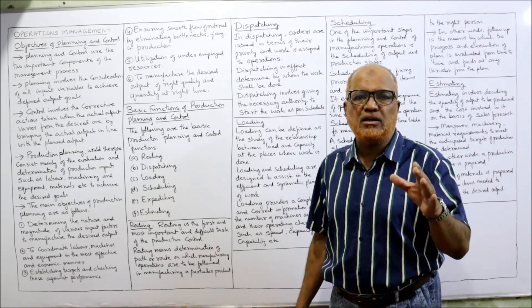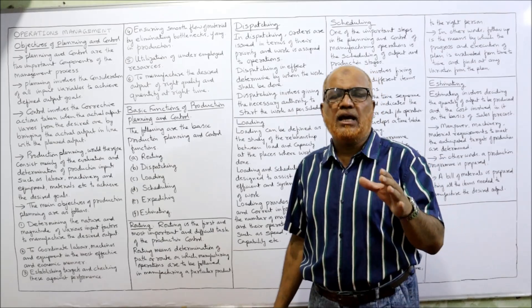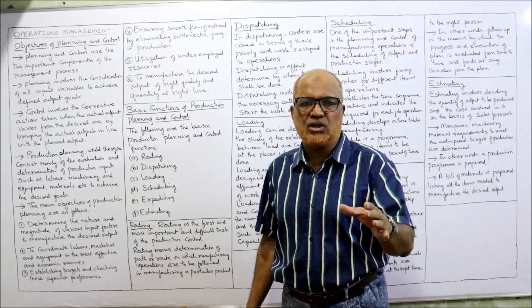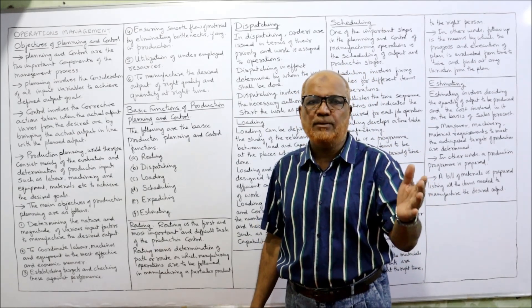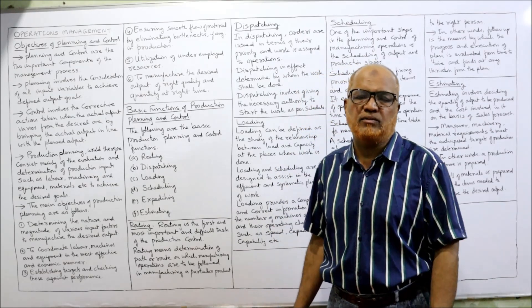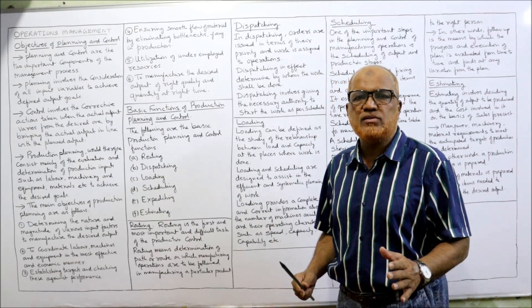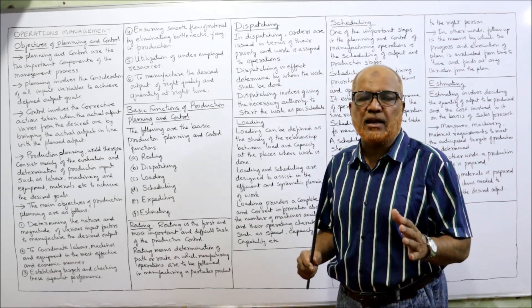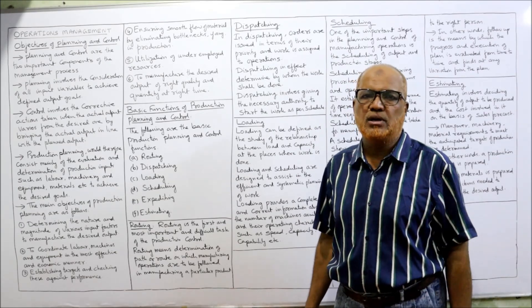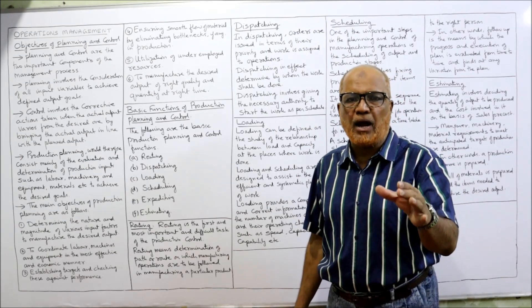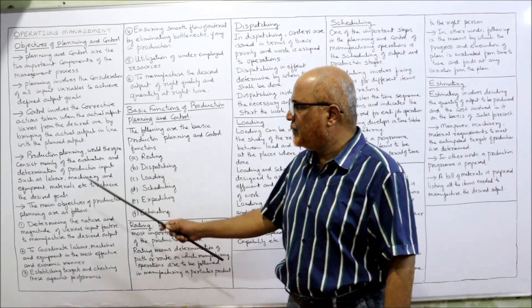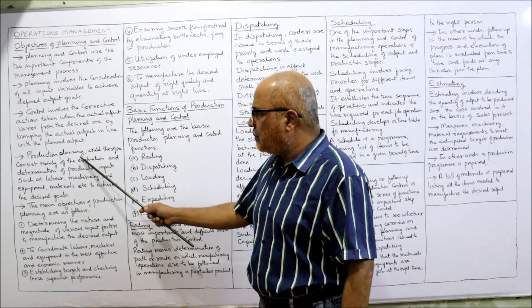Control involves taking corrective action — that means checking whether we are achieving what we have planned, or whether there are any deviations or variations between the planned activity and the actual activity. Controlling involves taking corrective measures if such deviations exist.